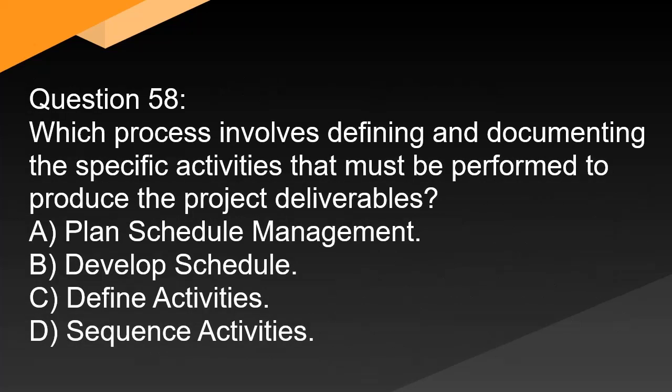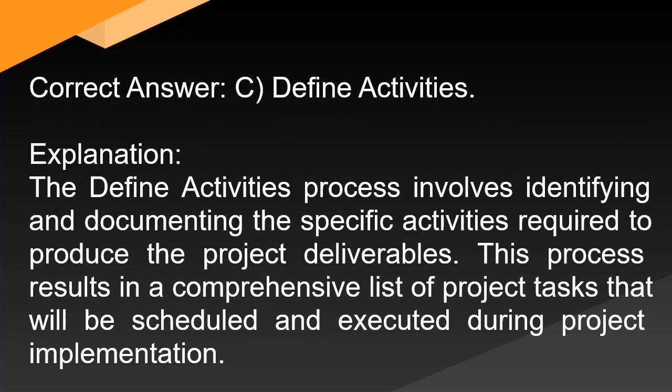Question 58: Which process involves defining and documenting the specific activities that must be performed to produce the project deliverables? A. Plan schedule management. B. Develop schedule. C. Define activities. D. Sequence activities. Correct answer: C. Define activities. Explanation: The define activities process involves identifying and documenting the specific activities required to produce the project deliverables. This process results in a comprehensive list of project tasks that will be scheduled and executed during project implementation.